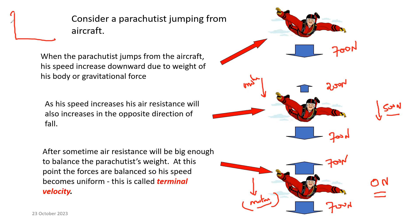When we sketch a speed-time graph to explain this motion: in the beginning he has a greater acceleration, then the acceleration decreases, and eventually he reaches a constant speed. This constant speed is called terminal velocity or terminal speed. This describes the motion of a parachutist or a skydiver up to this point.